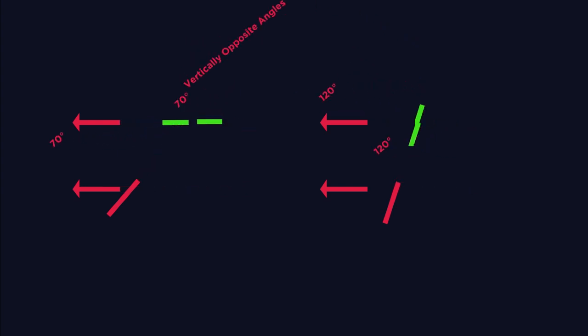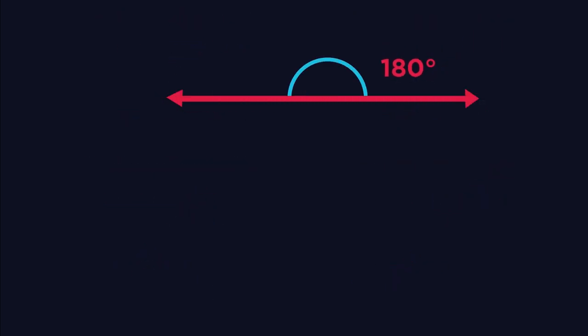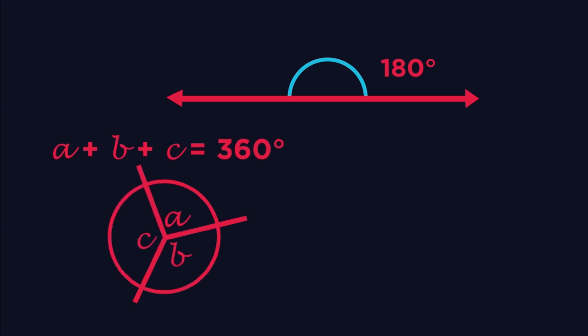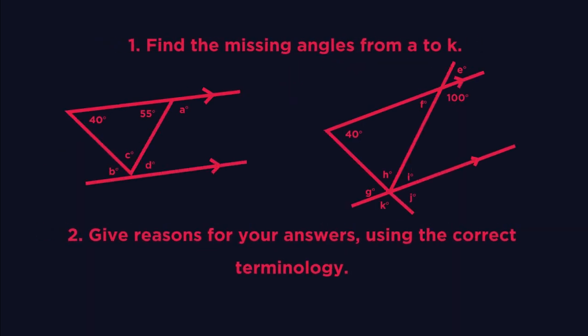Using these four angle facts, that there are 180 degrees on a straight line, 360 degrees around a point, and 180 degrees in a triangle, here are some questions to do. Pause the video, find the angles, and click play when you're ready.